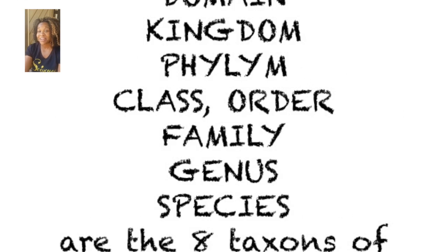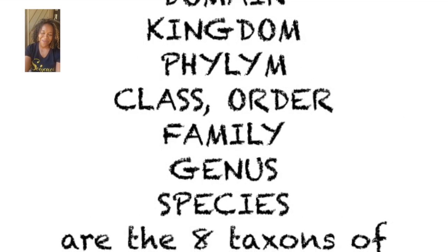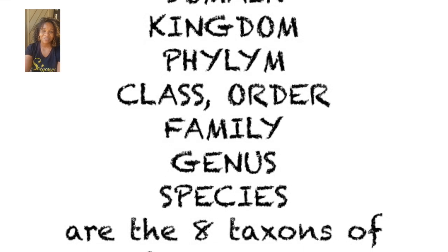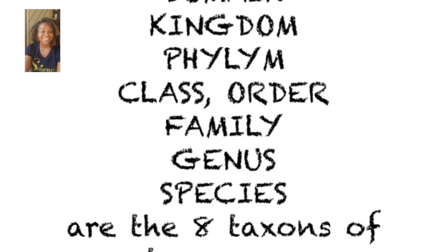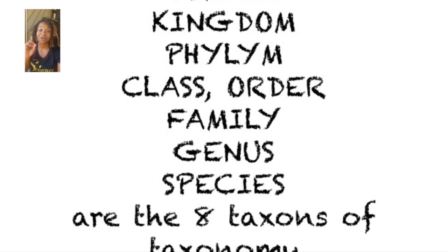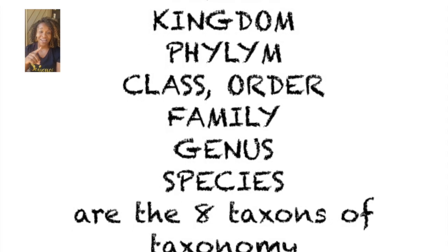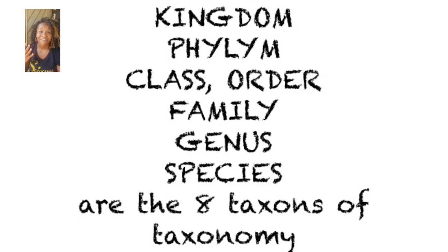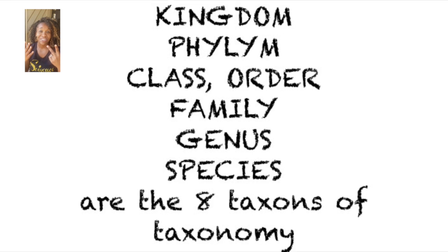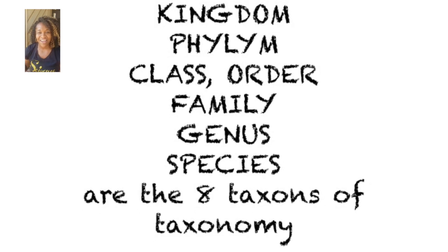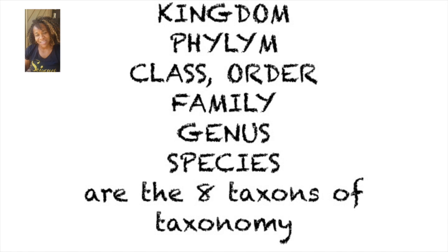Domain, Kingdom, Phylum, Class, Order, Family, Genus, Species — all eight taxons of taxonomy. Binomial nomenclature.